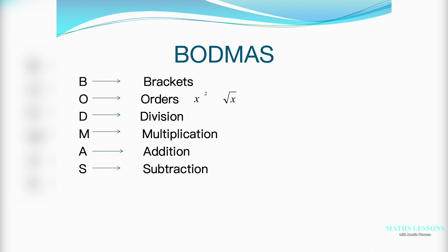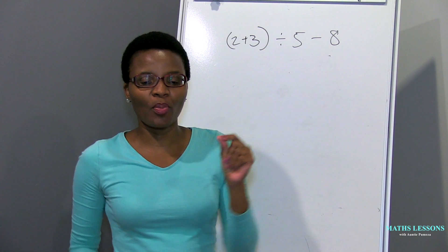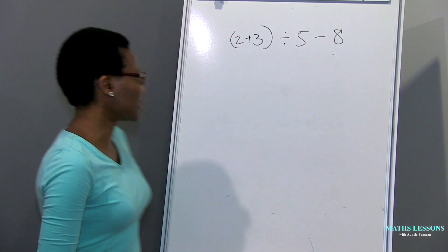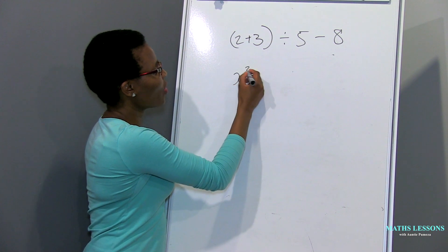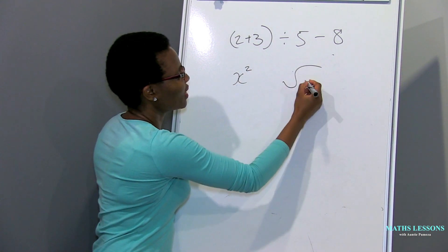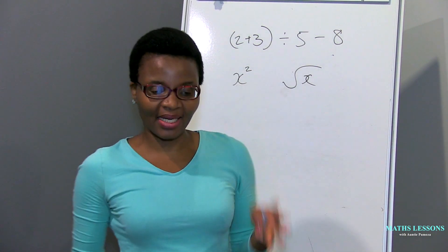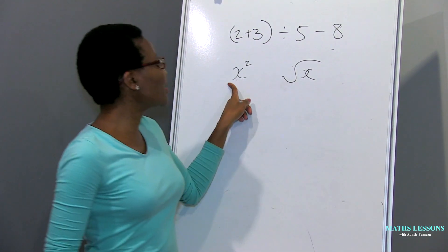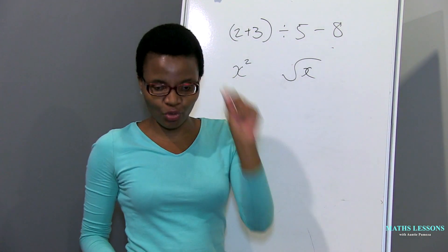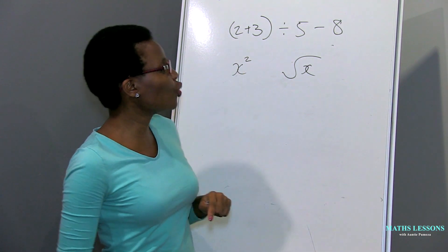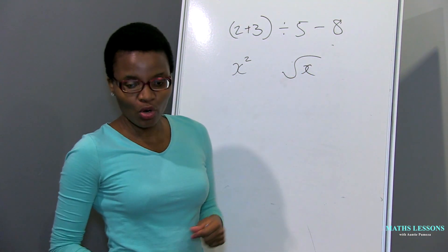Then O, which stands for orders. In primary school you may have been told O stands for 'of' — that's not wrong, but there's more to it. Orders means things with powers or roots — all your roots and all your powers come second. So whenever you're solving and you see a power or a root, you do that second, after brackets.